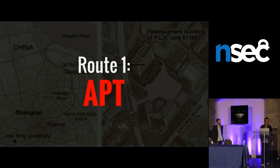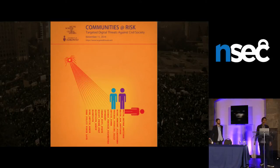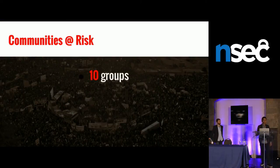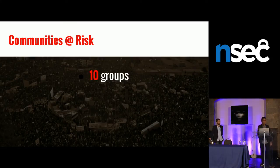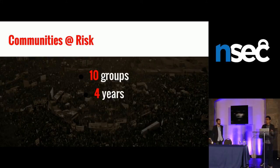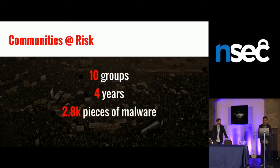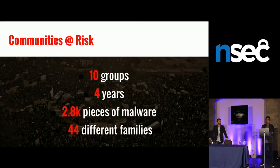We consider APT to be any national in-house capability that allows for development and operations — you can think of well-resourced actors like the NSA, China, Russia, et cetera. We had the question about civil society, and we did a study called Communities at Risk. We had 10 civil society groups, the majority doing activities related to China — looking at human rights issues, minority ethnic groups such as Tibetans. We worked with these groups for over four years to understand how they're being targeted, how they were reacting, and both the technical and political side of these attacks. We collected over 2,000 pieces of malware from 44 different malware families.